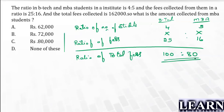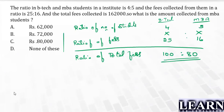This means for every 180 rupees collected, BTEC has contributed 100 rupees and MBA has contributed 80 rupees. Since the total fees collected is 1,62,000, for a total of 180 rupees the MBA contribution is 80. So what is the MBA contribution for 1,62,000? The 000s cancel, leaving the calculation.